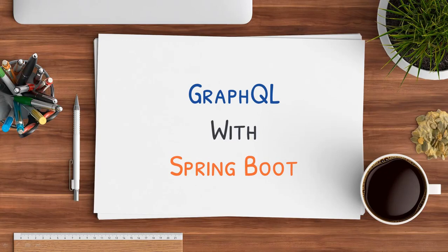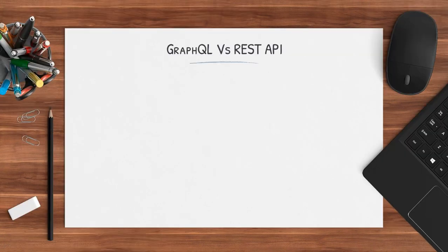This video is part of the course GraphQL with Spring Boot. Link for this course is given in the description. Hello and welcome back. Till now we have seen what is GraphQL, what is query, mutation, and schema in GraphQL. Now it's the right time to see what is the difference between REST API and GraphQL, and in this lecture we will cover exactly that.